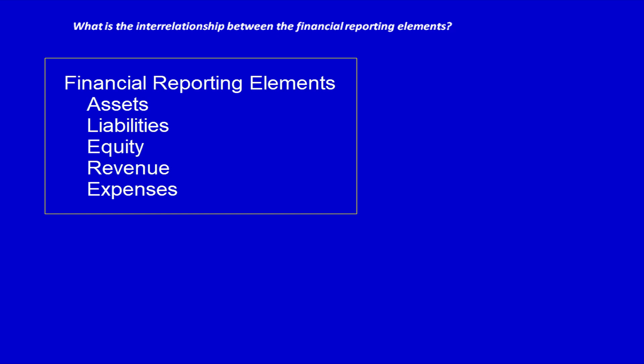What is the interrelationship between the financial reporting elements? Now that you have an understanding of the definition of the financial reporting elements — assets, liabilities, equity, revenue, and expenses — we can look at the relationship between the elements.